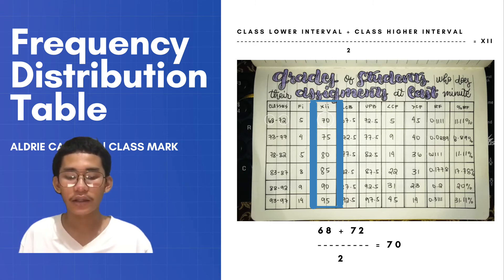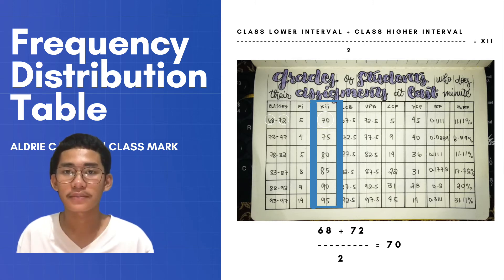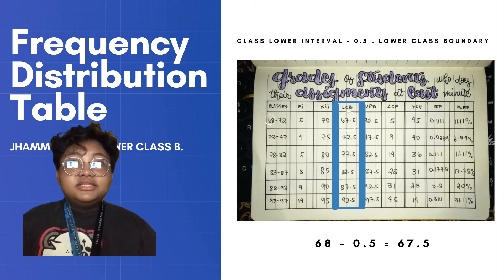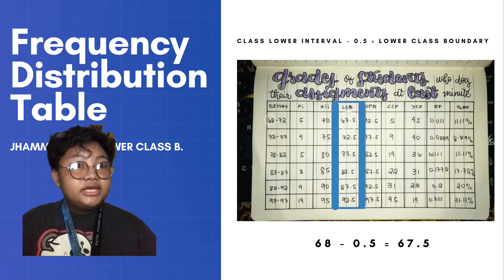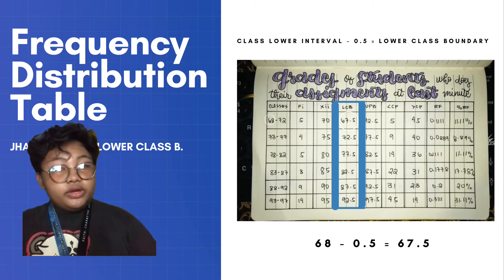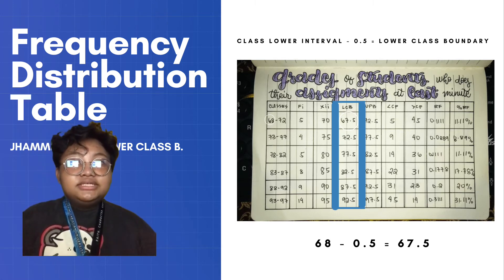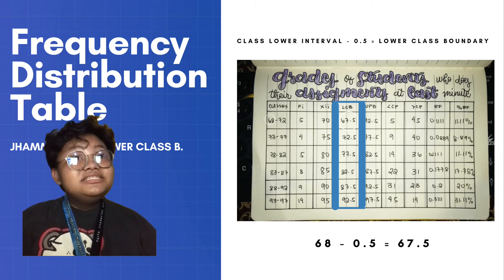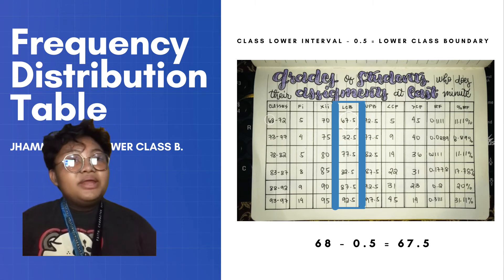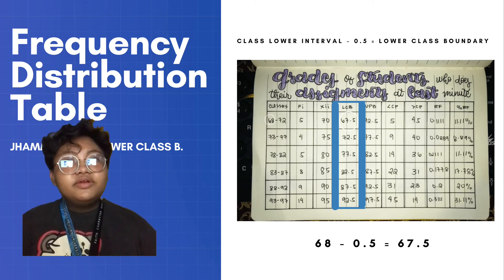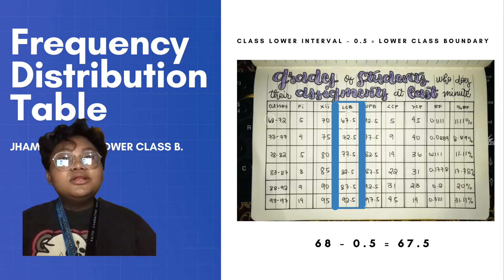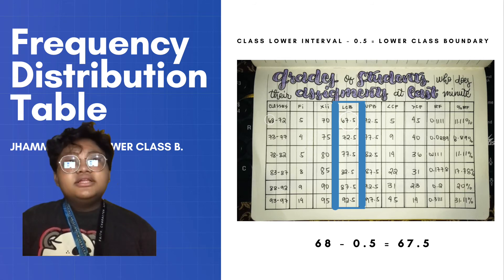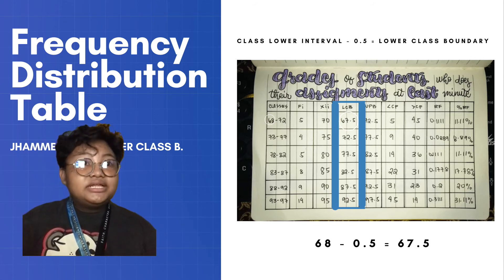After we know how to get the class marks, we must proceed to getting the lower class boundaries. In getting the lower class boundaries, we cite the class lower interval and subtract 0.5. In our data, the class lower interval is 68, therefore 68 minus 0.5 is 67.5. So 67.5 is the lower class boundary of our first class. You will do the same for the others.